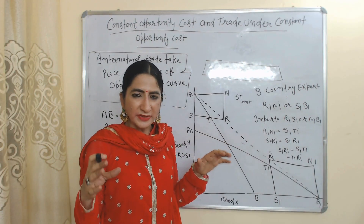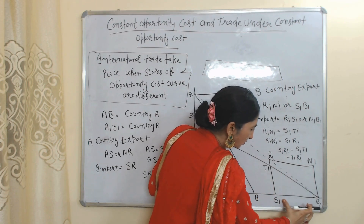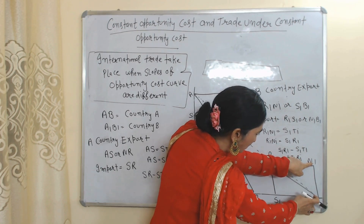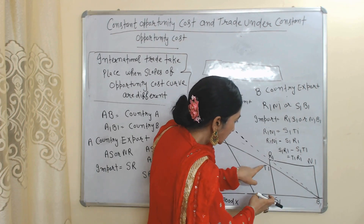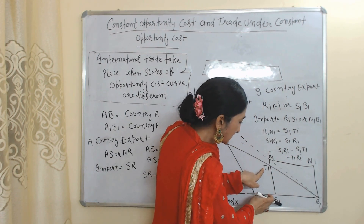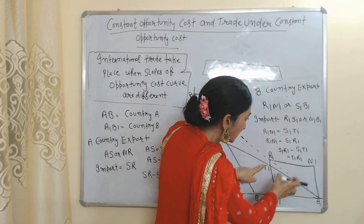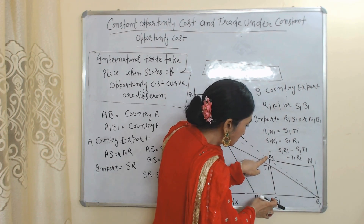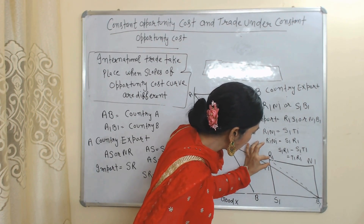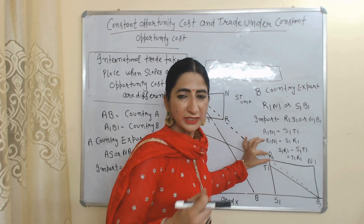Now we will see the gain from trade of country B. After international trade, country B exports R1N1 — R1N1 is equal to S1B1 — and country B imports R1S1, which is equal to N1B1. Domestically, country B receives only T1S1 in exchange for R1N1, but in international trade country B is receiving R1S1 in exchange for R1N1. R1S1 is more than T1S1, and the remaining part R1T1 will be called the gain of country B from international trade.